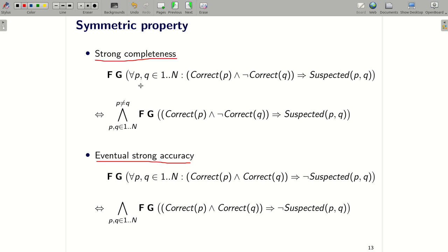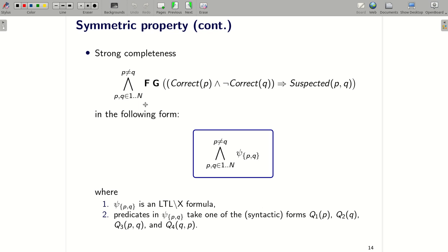And what else? We can see here that we can replace a universal quantifier with a big conjunction. And we can move the temporal operators inside the big conjunction. Instead of checking a specific property, we generalize our result. So our cutoff result can be applied to every property in the following form. And psi PQ is an LTL minus X formula and every predicate inside psi PQ has one of the syntactic forms Q1P, Q2Q, Q3PQ and Q4QP.